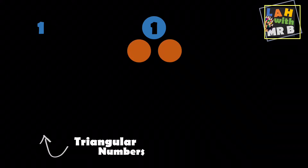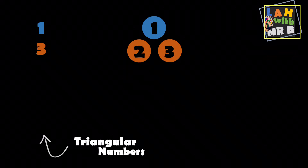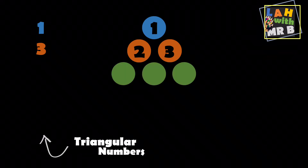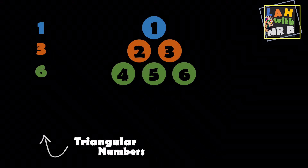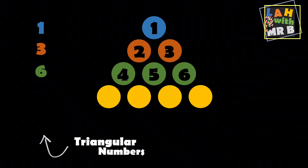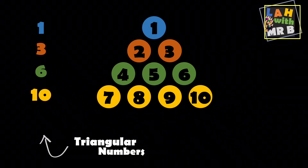To make our next triangular number we're going to need more than one dot — we're going to need two in fact, because if we had just one more we wouldn't be able to make a triangle shape. So to arrange our next triangle we need one, two, three dots, meaning our next triangular number is three. The next triangle takes another three dots, giving us one, two, three, four, five, six dots — so the next triangular number is six. We can keep adding dots to make bigger and bigger triangles; in this case we've got one through ten dots, so the next triangular number is ten.